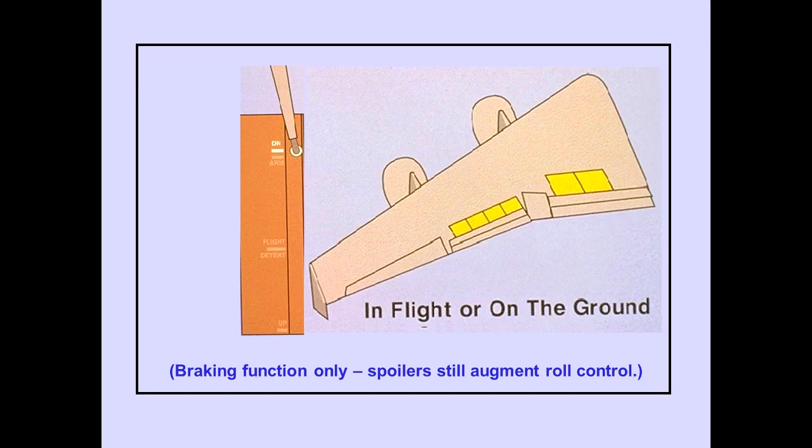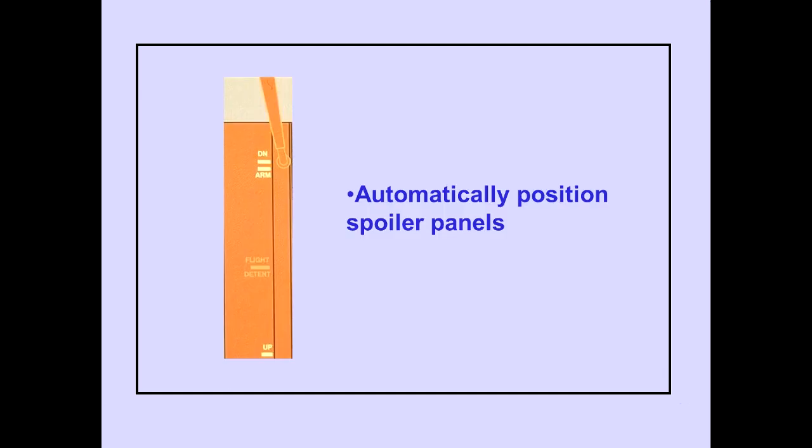When in flight or on the ground, placing the speed brake lever to down positions all spoiler panels down. The down, arm, and up positions have a feature which can automatically position the spoiler panels.